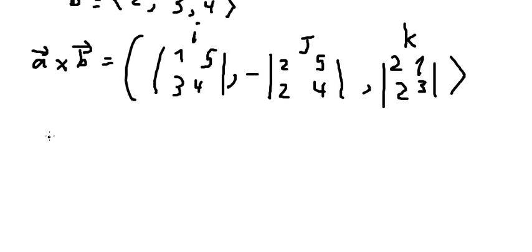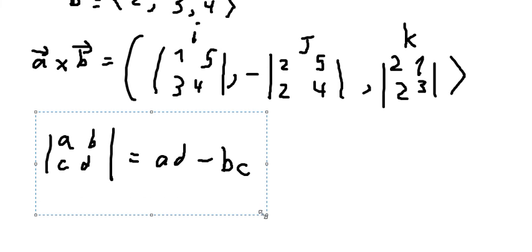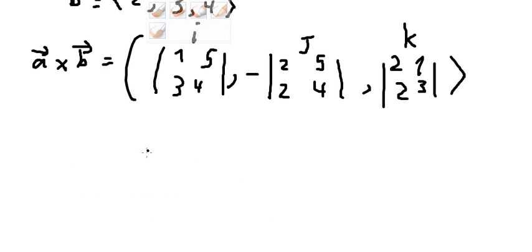Now we have the formula in here. We have a multiplied by d minus b with c. So in this one we have number one with number four minus three with number five, so we have negative eleven.